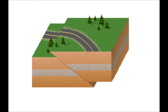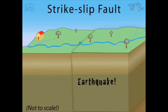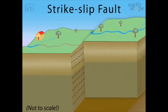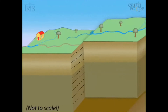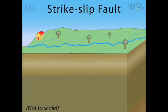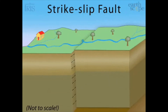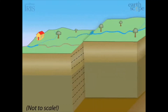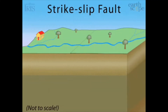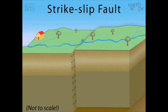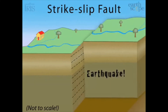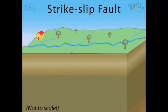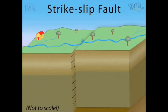Transform faults, also called strike-slip faults, are caused by horizontal compressional forces which cause rock masses to slide or slip past one another parallel to the fault line. The fault plane in a strike-slip fault is usually vertical, so there is no hanging wall or foot wall. Strike-slip faults are associated with transform plate boundaries; the most famous example is the San Andreas Fault.